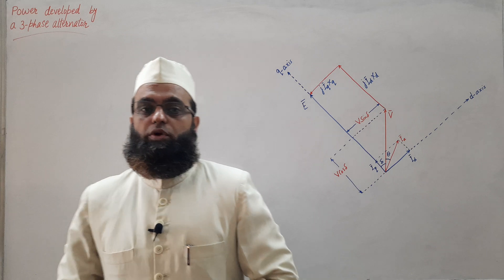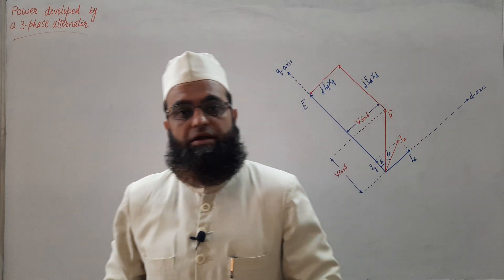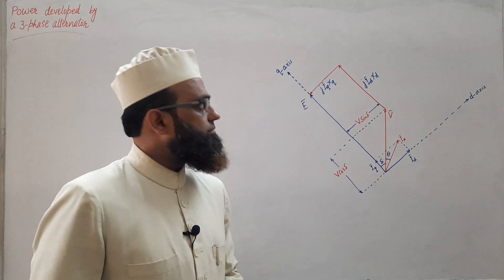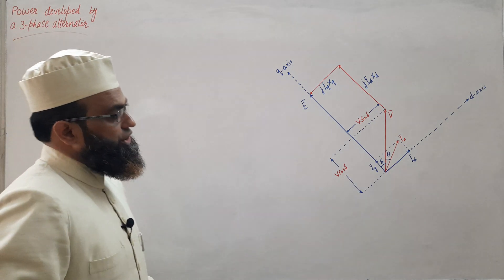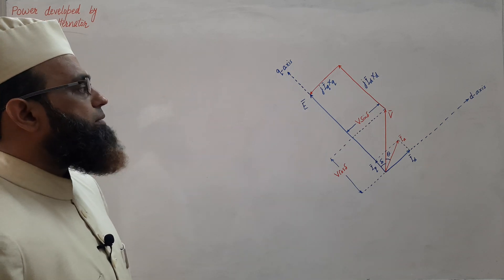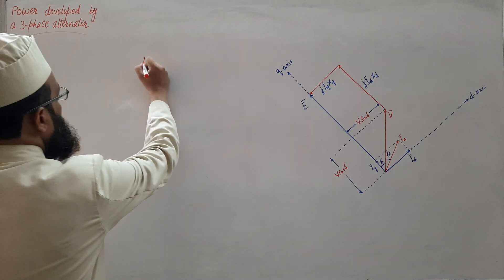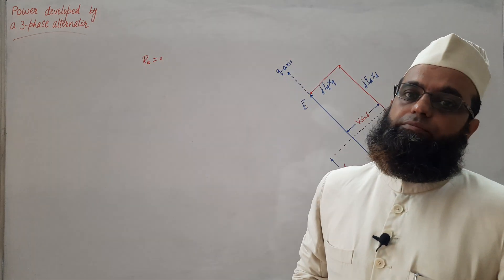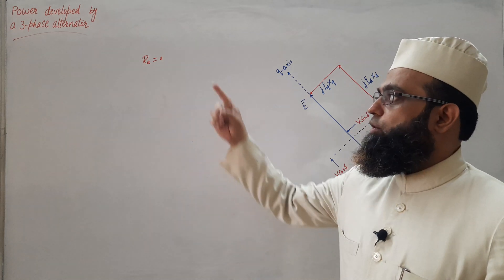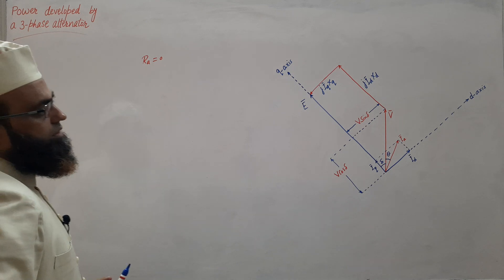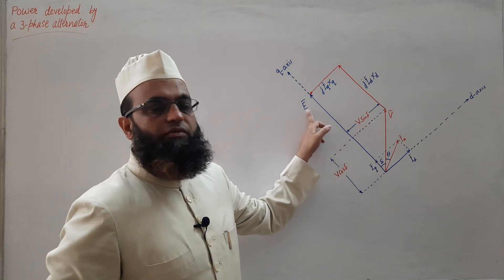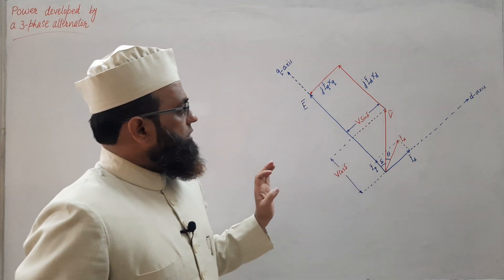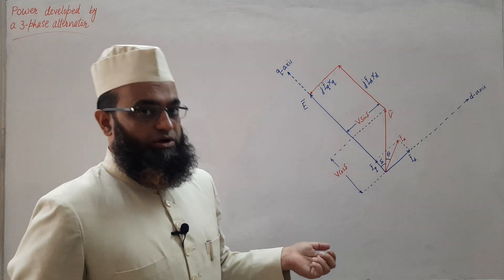In this lecture we are going to discuss power developed by a three-phase alternator, that is a synchronous generator. First we will discuss for a salient pole machine and then for a cylindrical rotor machine. For the salient pole machine, the phasor diagram is shown here. We have ignored the armature resistance Ra, as we are ignoring copper losses in the armature windings. This is the induced EMF and this is the terminal voltage.